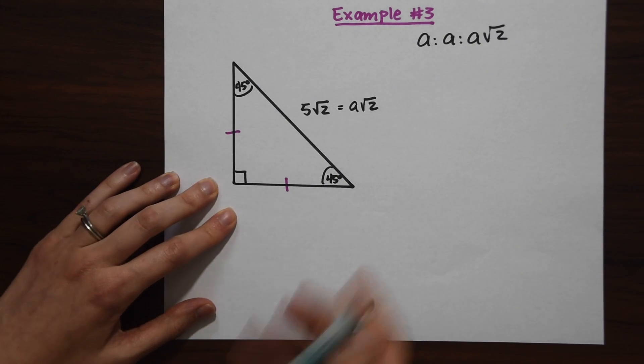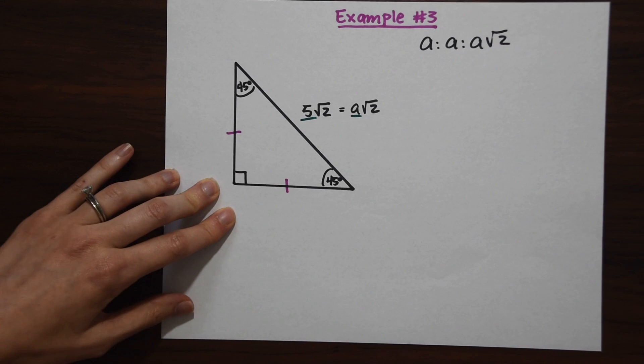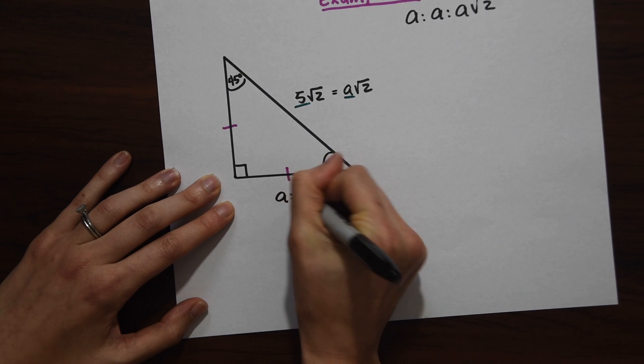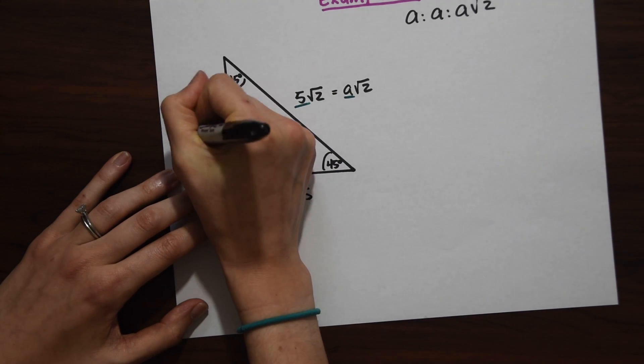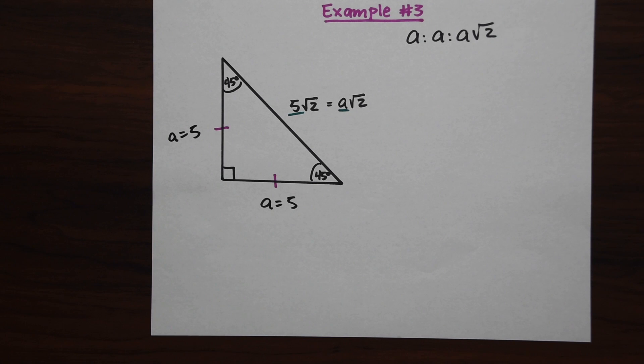We know we can find the rest of these lengths. We know we can fill in a equals 5 here and a equals 5 here. We know our side lengths, so that was an easy one.